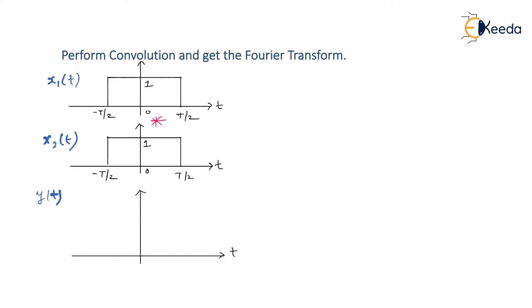Since both rectangular functions being convolved have equal width, the result is definitely a triangle. The lower limit of y(t) is the sum of the lower limits: −T/2 + (−T/2) = −T. The upper limit is T/2 + T/2 = T. So y(t) runs from −T to T, and since it is a triangle, let me draw the final triangle.